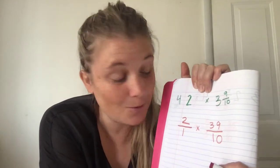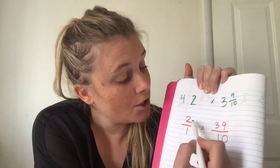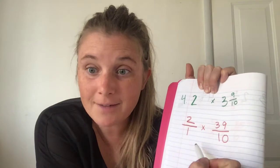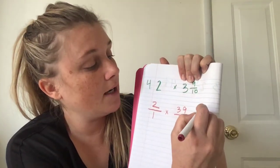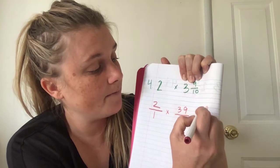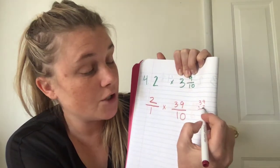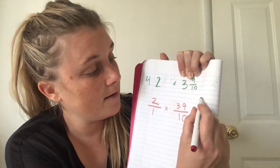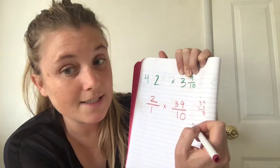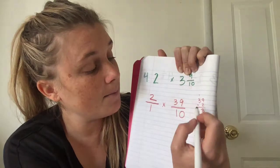Multiply the numerators. Okay, so let's multiply these numerators. Two times by thirty-nine. I need to write that down. I can't do that in my head. So, thirty-nine times by two. Two times nine is eighteen. Carry the one. Two times three is six. Plus one more is seven.